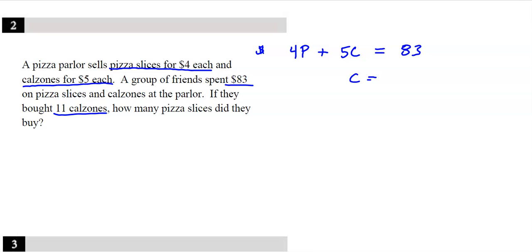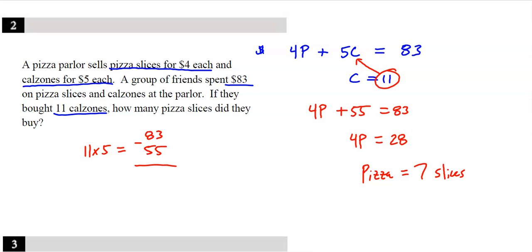And then it says they bought 11 calzones. So they tell us that C is 11. So if you set it up with a system, you could pretty much just substitute it in to 4P plus 55 equals 83. 4P equals 28, divide divide. And it looks like pizza comes out to be 7 slices. Now you also could have just done 11 calzones at $5 a pop, that's $55. Subtract that from the 83 they spent, you'd realize you have $28 left for the pizza. Then do that 28 divided by $4 a slice would have also given you 7 slices. So didn't really have to do system of equations there.